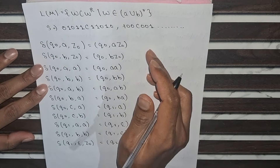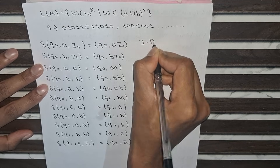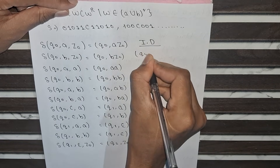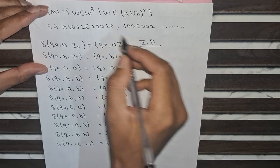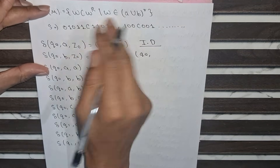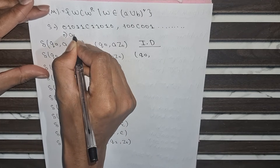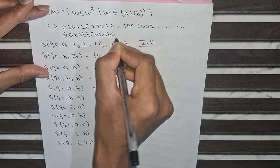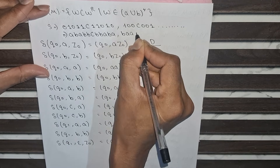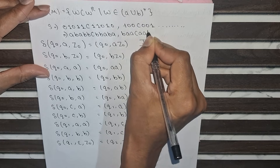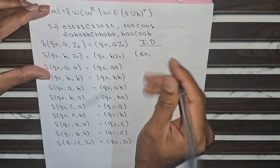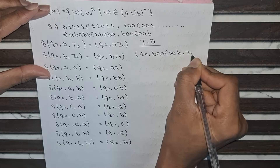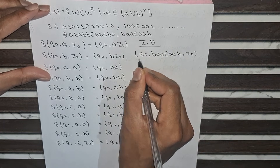Now we will write the Instantaneous Description (ID) for this PDA. We consider 0 as A and 1 as B. The string we take for the ID is B A A C A A B. We write the initial configuration as (Q0, BAACAAB, Z0), where Z0 is the top of the stack.